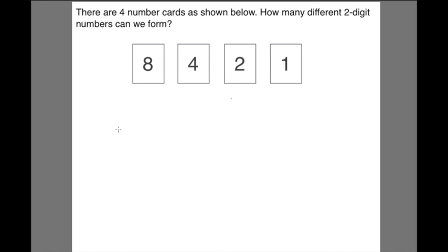First, I will list down 8, then I will have 4, I will have 2, then I have 1. List down 8, 4, 8, 2, 8, 1. So actually you have 84, 82, 81. Next you list down 4, then you list down the cards that you have not used. 8, 2, and 1. So actually you have 48, 42, 41.